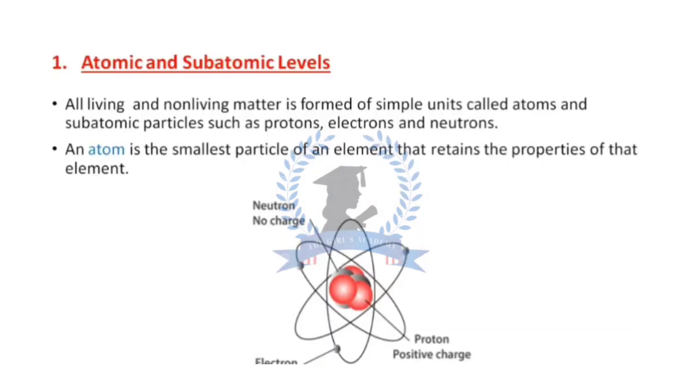Number one is atomic and subatomic levels. We all know that there are some basic subatomic particles which, as you can see here, are neutron, proton, and electron.